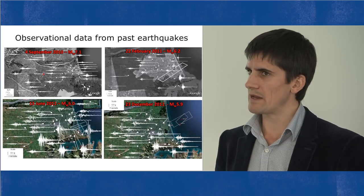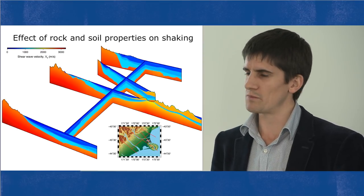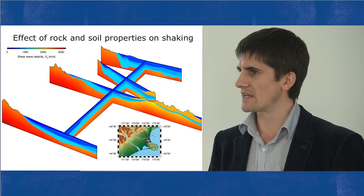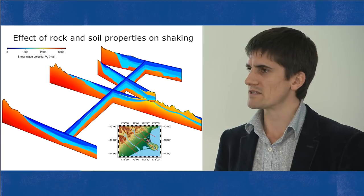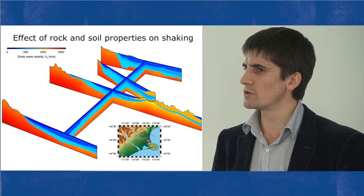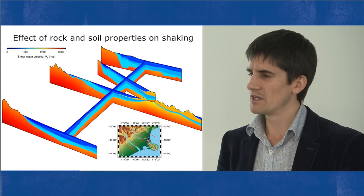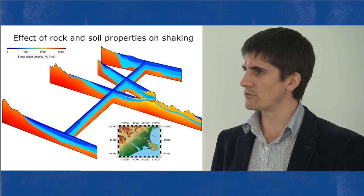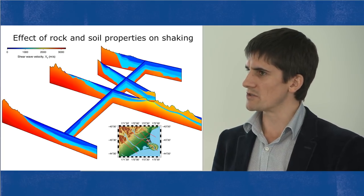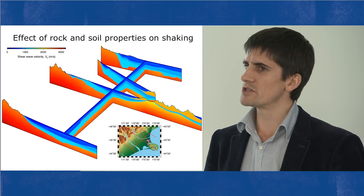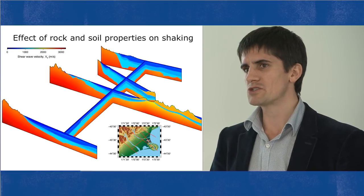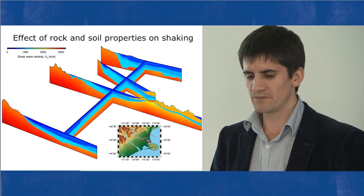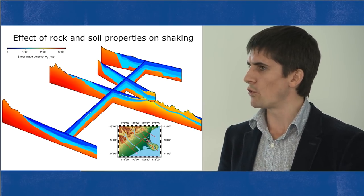A key feature when developing these models is understanding the difference between rock and soil properties. This image highlights that difference in the Canterbury region — each coloured transect is a linear transect through a different part of the Canterbury basin. Red colours represent rock properties, with darker red indicating stiffer rock. As the colour transitions to light blue and then dark blue, we move into softer soil deposits. The depth of soil varies across the region, deepest around Darfield and Methven, shallowing toward Banks Peninsula and the Southern Alps.